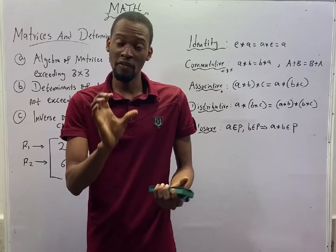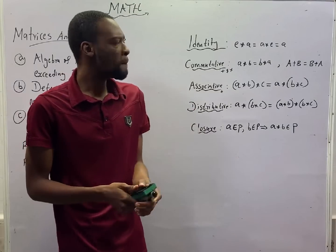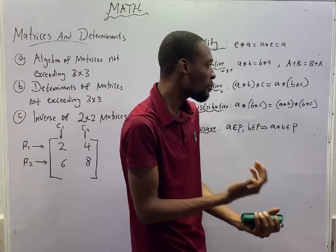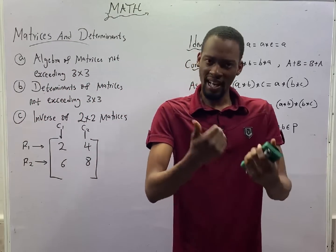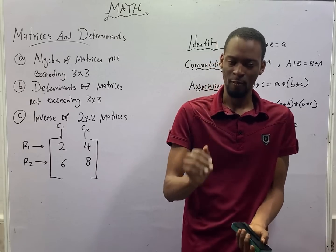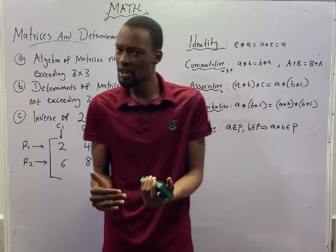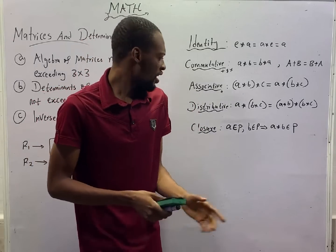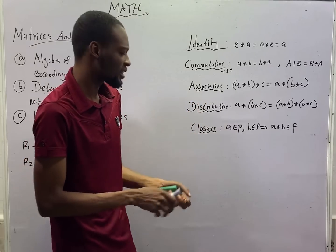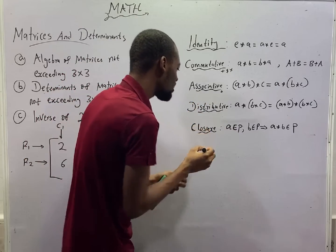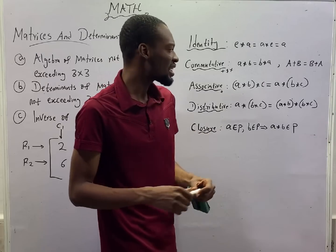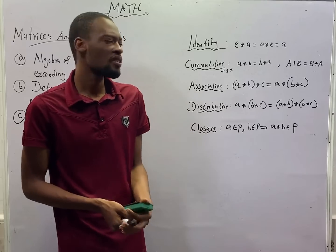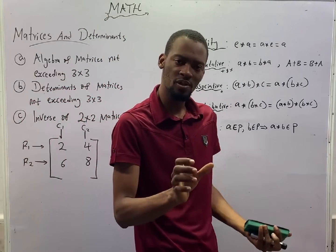In episode number 44, I took you through binary operations. I said when you operate a number with the identity, you will get the number. And when you operate a number with the inverse, you will get the identity. There are four things I did not mention in that class, and I will do that today as it also relates to Matrices and Determinants.